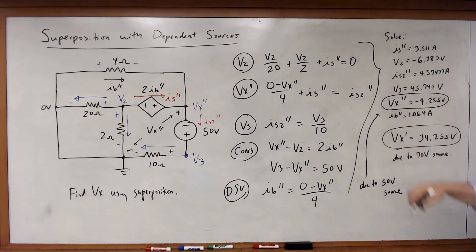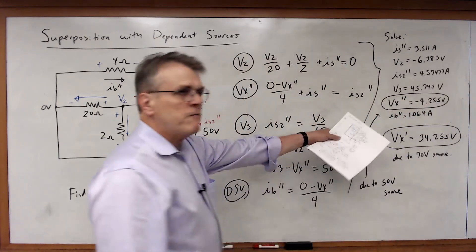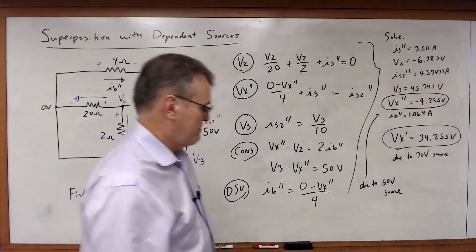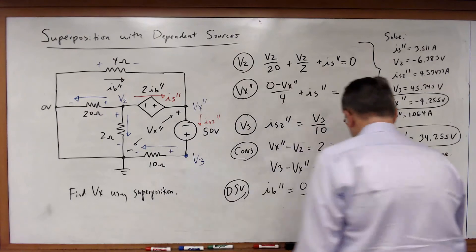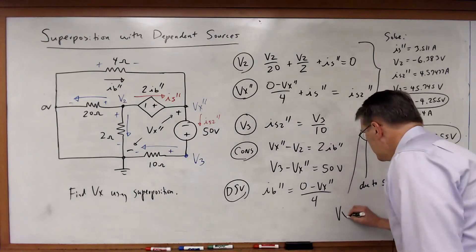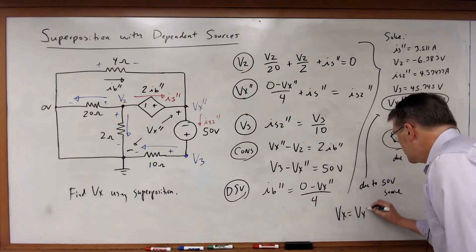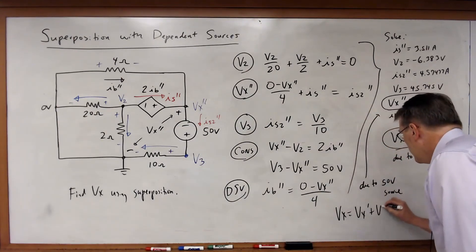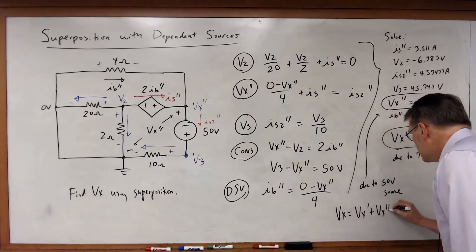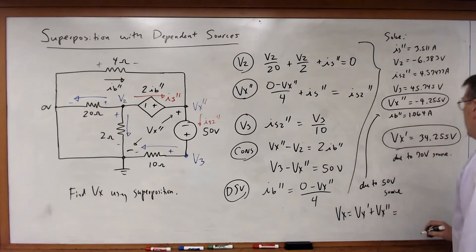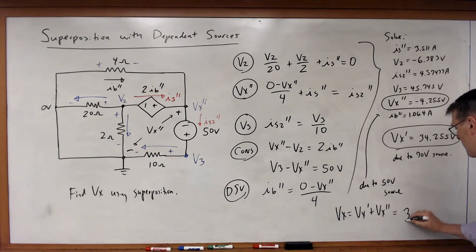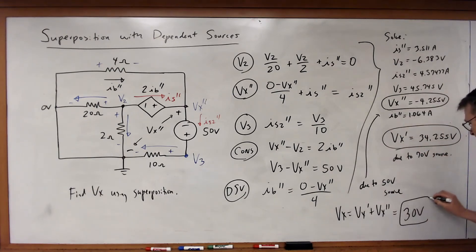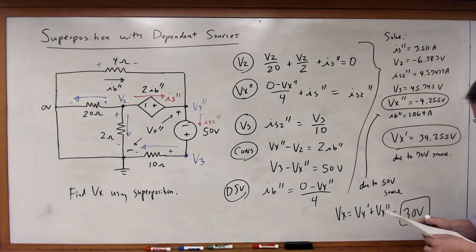So that's my other partial voltage. What is Vx? Vx is just equal to Vx prime plus Vx double prime, and that equals 30 volts. And that is my answer.